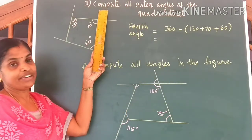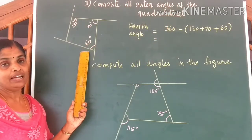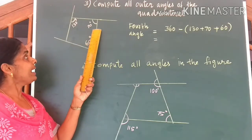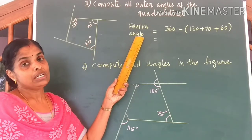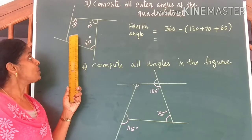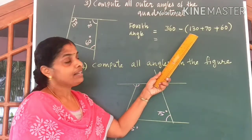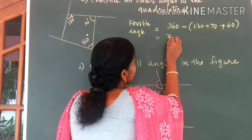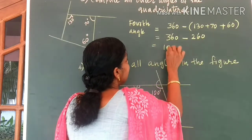Look at the third question, children. Compute all outer angles of a quadrilateral. You are given a quadrilateral and all four sides are extended outside. Three angles are given. First of all, let us find the fourth angle. We know the sum of all angles of a quadrilateral is equal to 360 degrees. So to get the fourth angle, from 360 degrees we subtract the sum of the given three angles, and you get 360 minus 260, which gives you 100 degrees.